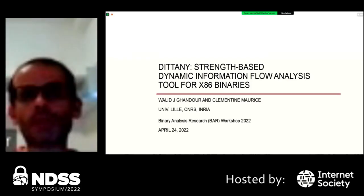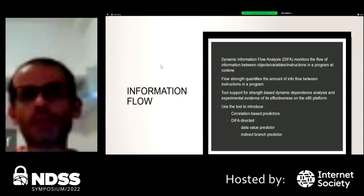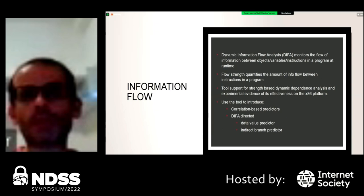DATA is a strength-based dynamic information flow analysis tool for x86 binary. Dynamic information flow analysis monitors the flow of information between objects, variables, or instructions in a program at runtime — originally used for security purposes to track information leakage and tampering. Flow strength quantifies the amount of information flow between instructions or variables. I have implemented a tool that supports strength-based dynamic dependency analysis for x86 binary and used it to introduce correlation-based techniques such as a data value predictor and indirect branch predictor.